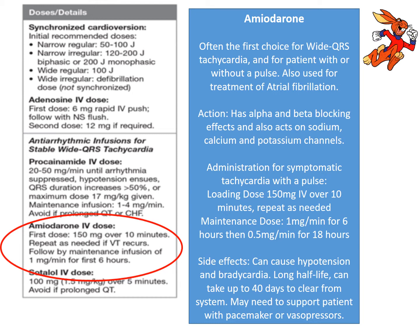Amiodarone is primarily used for wide QRS tachycardias and when we get into the CPR portion, we also give it for patients in a lethal ventricular arrhythmia.